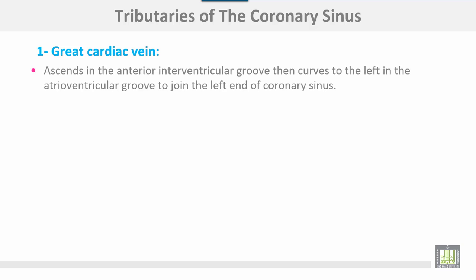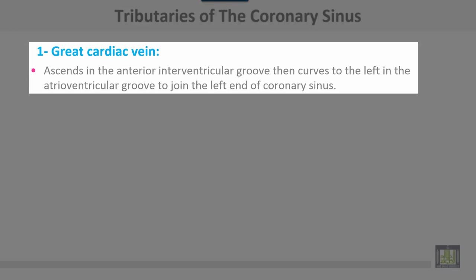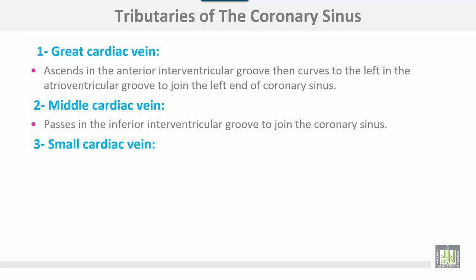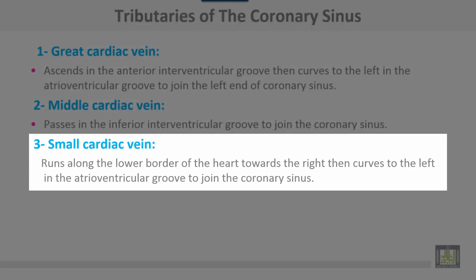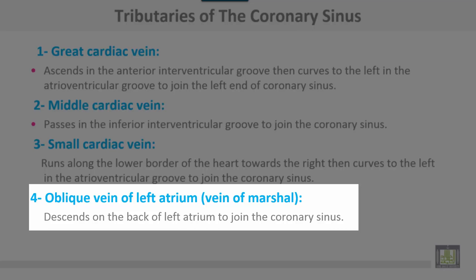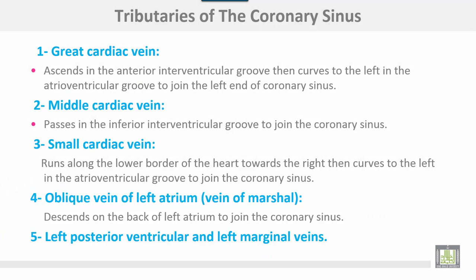Tributaries of the coronary sinus: the great cardiac vein ascends in the anterior interventricular groove, then curves to the left in the atrioventricular groove to join the left end of the coronary sinus. The middle cardiac vein passes in the posterior interventricular groove to join the coronary sinus. The small cardiac vein runs along the lower border of the heart towards the right, then curves to the left to drain into the coronary sinus. The oblique vein of the left atrium, or vein of Marshall, descends on the back of the left atrium to join the coronary sinus. Additional tributaries include the left posterior ventricular and left marginal veins.